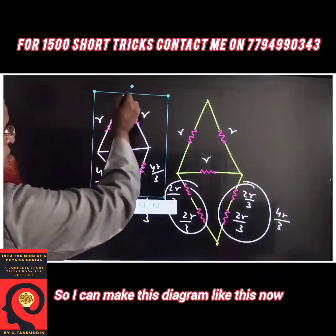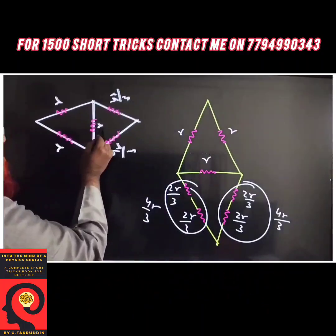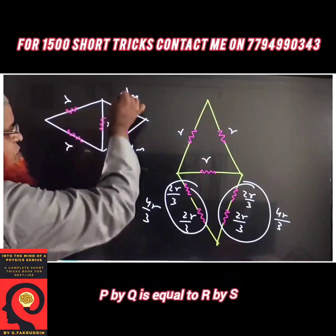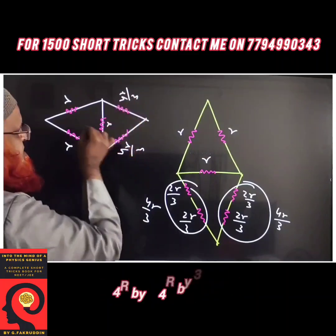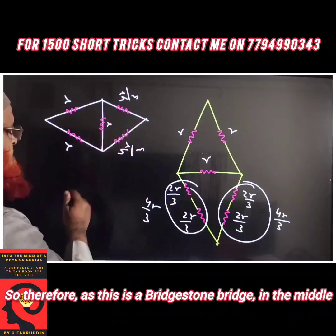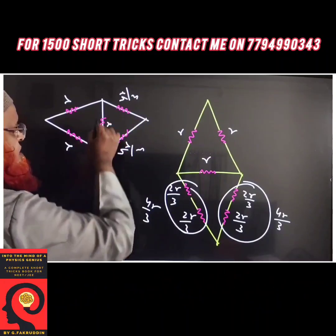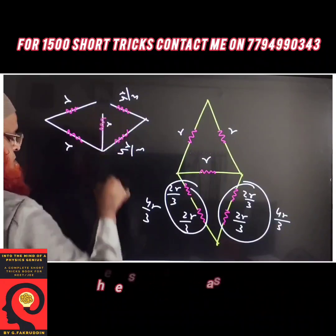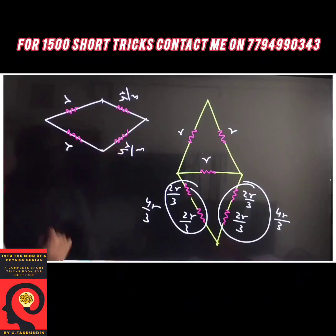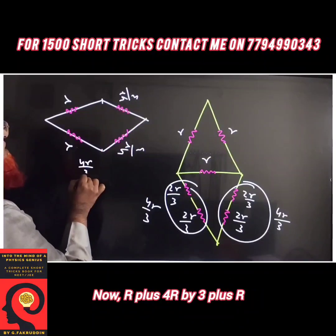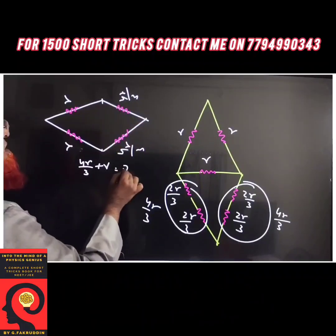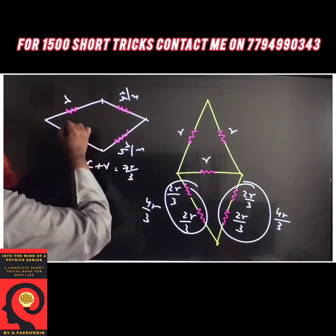Now, is this not just like a Wheatstone Bridge? Yes — P/Q equals R/S: 4R/3, 4R/3, R, R. Therefore, as this is a Wheatstone Bridge, no current passes in the middle, so we can remove the middle part. Now R + 4R/3 + R are in series, giving 7R/3.